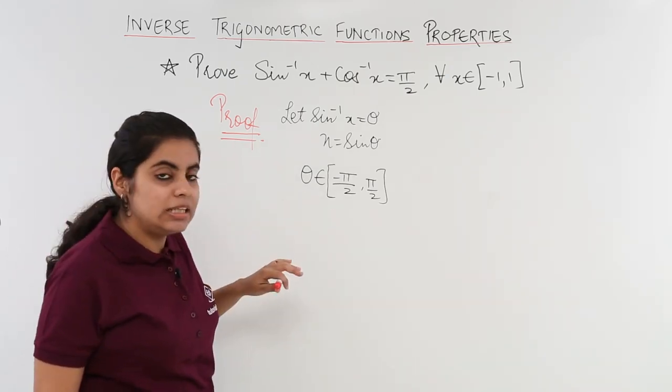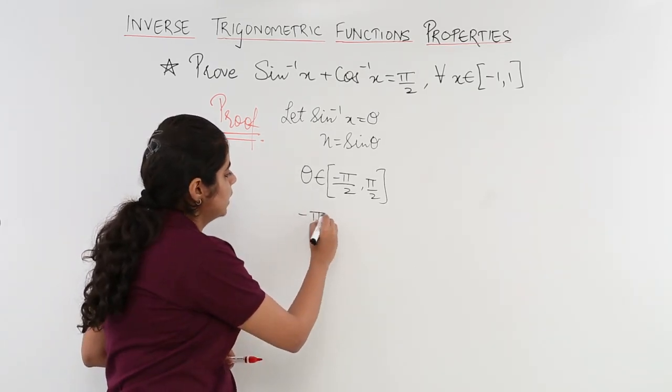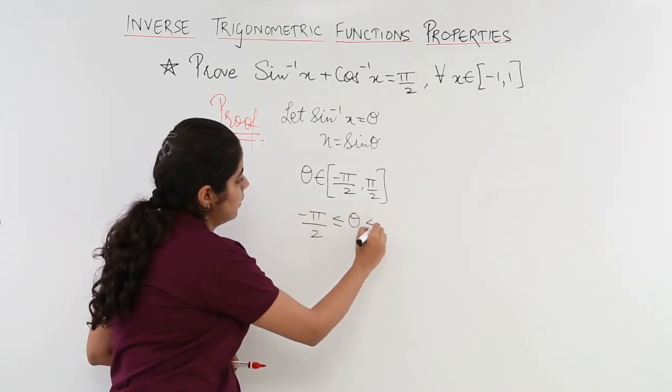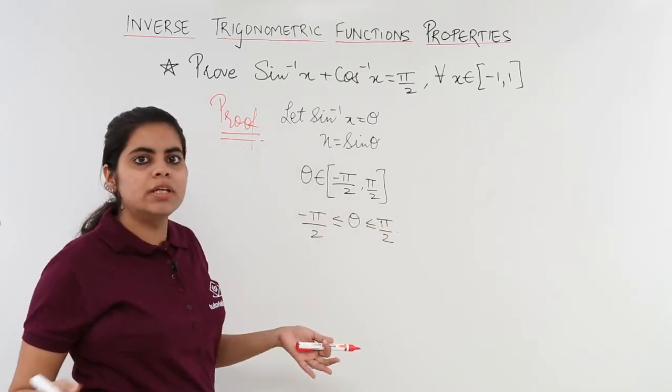Now if I write the minus pi by 2 to pi by 2 in such a manner is it incorrect? Less than greater than 4? No it is not incorrect.